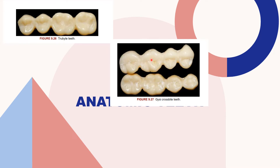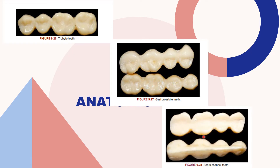This picture shows the Gysi cross-bite teeth designed in 1927. Here the maxillary buccal cusp is eliminated and the palatal cusp occluded with the anatomic lower posteriors. The occlusive surfaces of all the posterior teeth were reduced, and these were used for cross-bite cases. This one is the channel tooth, designed by Sears in 1927, where the maxillary occlusive surfaces had a deep channel running mesiodistally along all four posterior teeth.